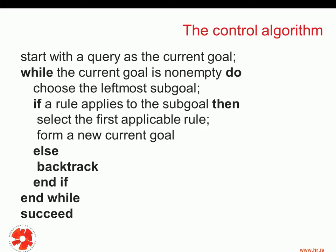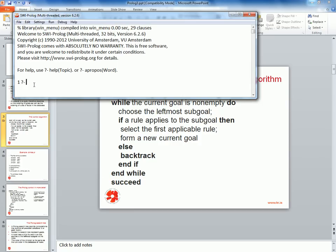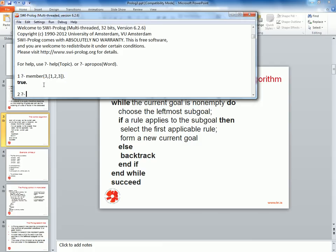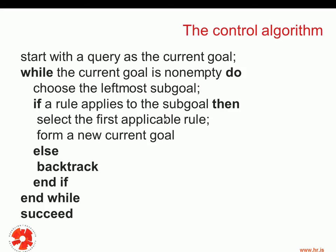Here we can show our first version of the control algorithm — a high-level version, with a more detailed version to follow. Prolog starts with a query as the current goal. For example, when we are in the Prolog interpreter, Prolog waits for a query. When I ask 'is 3 a member in the list 1, 2, 3?', I'm posing a query to which Prolog will find an answer — in this case, true. So we start with the query as the current goal.